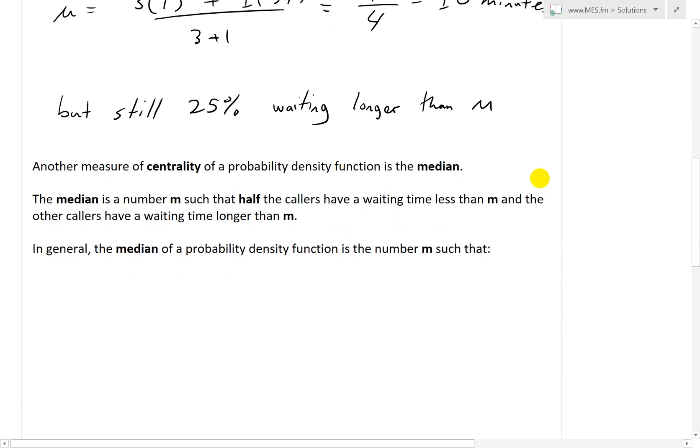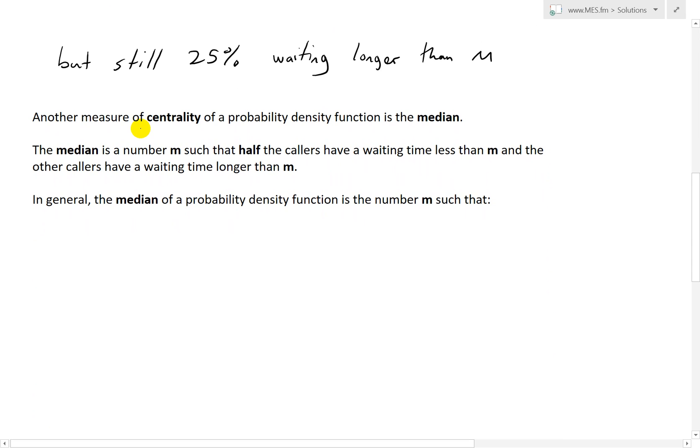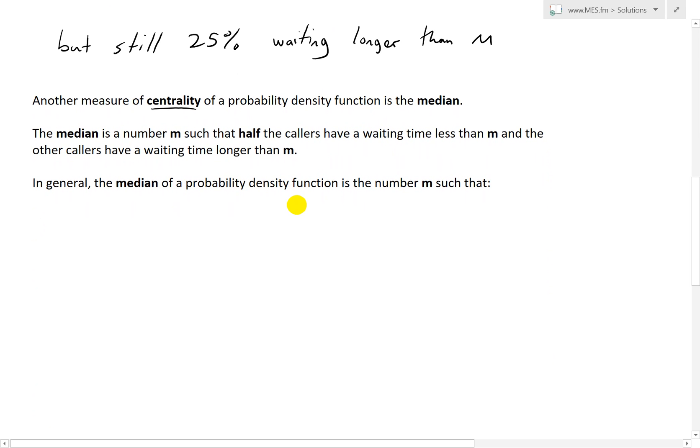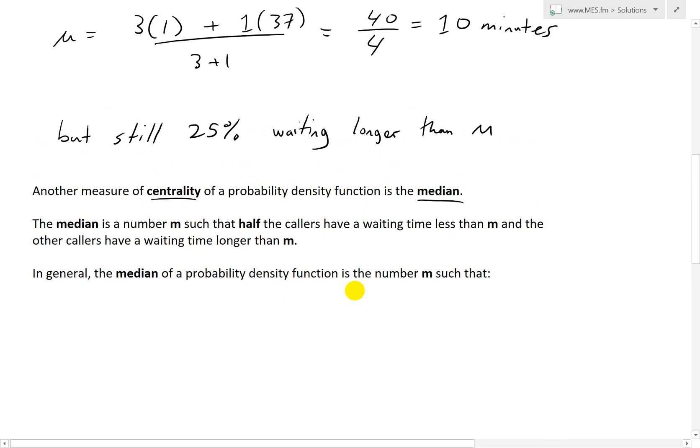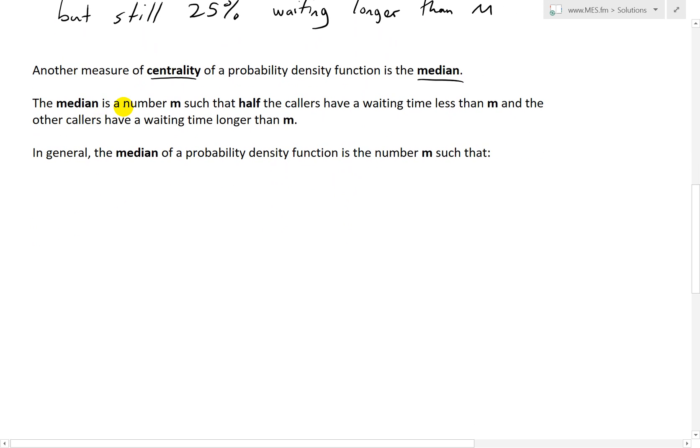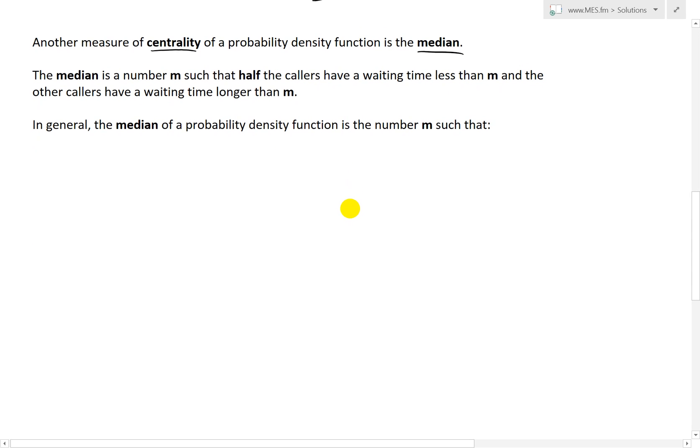This brings us to another measure of centrality of a probability density function, and that is the median. The median is a number m such that half the callers have a waiting time less than m, and the other callers have a waiting time longer than m.